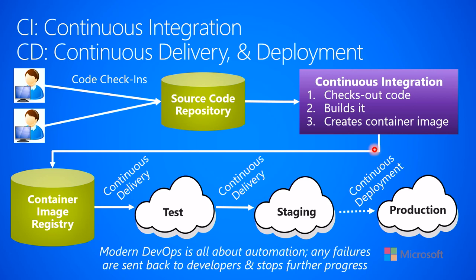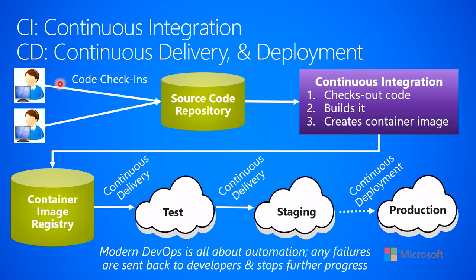Of course, anywhere along the way something could fail. The code may not compile because there's something wrong in the source code. Something could go wrong with the registry. Your test suites may have performance issues, or something could be functionally incorrect. Pushing out to staging, something might go wrong. So you also have to automate the failure cases. Any failures that occur anywhere along this pipeline — typically called the DevOps pipeline — need to send notifications back to the developers, and any further progress down the pipeline is stopped. The developers receive notification, go and fix the code, check things in, and start the pipeline over again for the very next version.